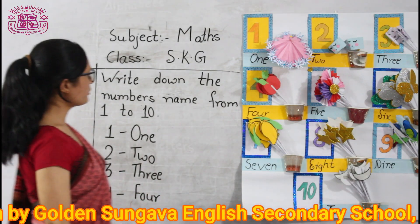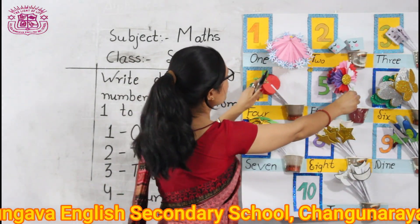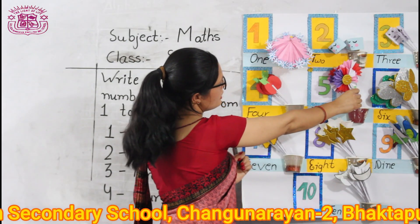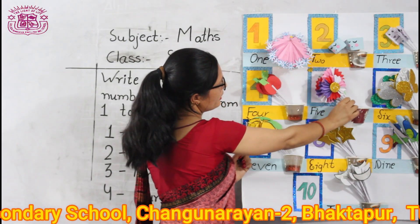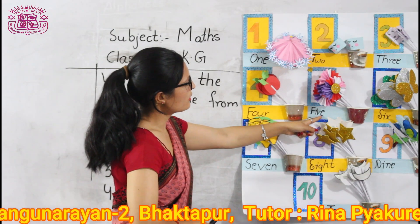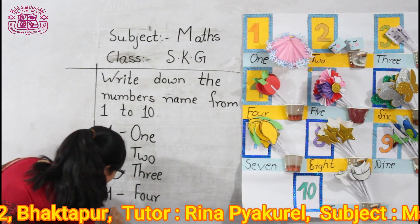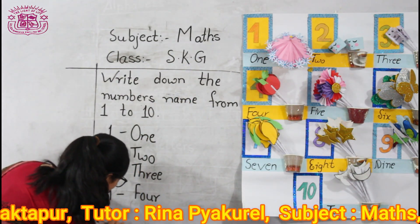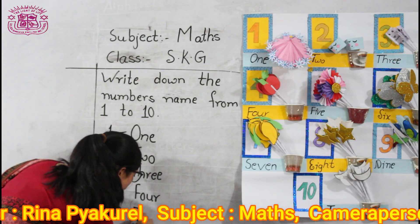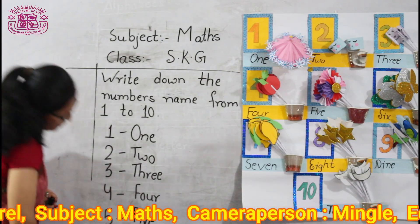What comes after 4? Look here. What comes after 4? 5. Okay. What is the spelling of 5? F-I-V-E. 5.